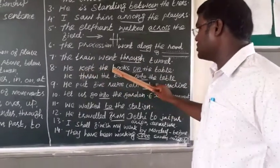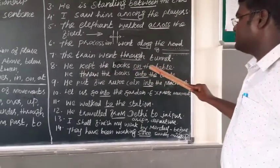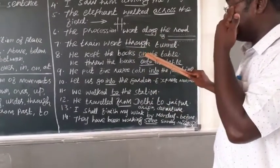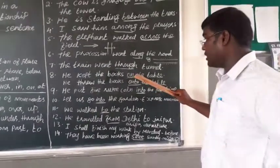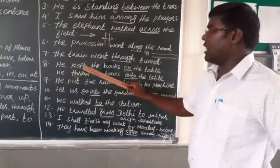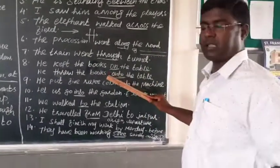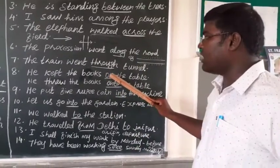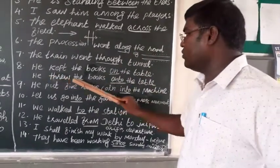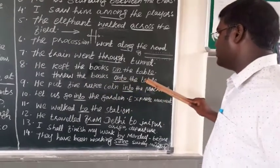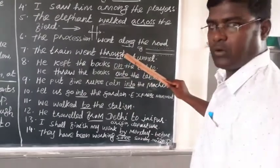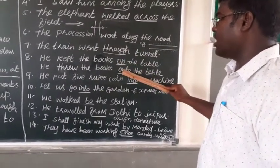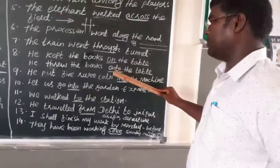Good. He kept the books on the table. This also, here we see, it can be a place, or direction. Anything can be. On. On the table. But depends on the sentence, where it is being used. According, you must use the word on, or into. He threw the books into the table. Into the table. Just into the table means keeping only.